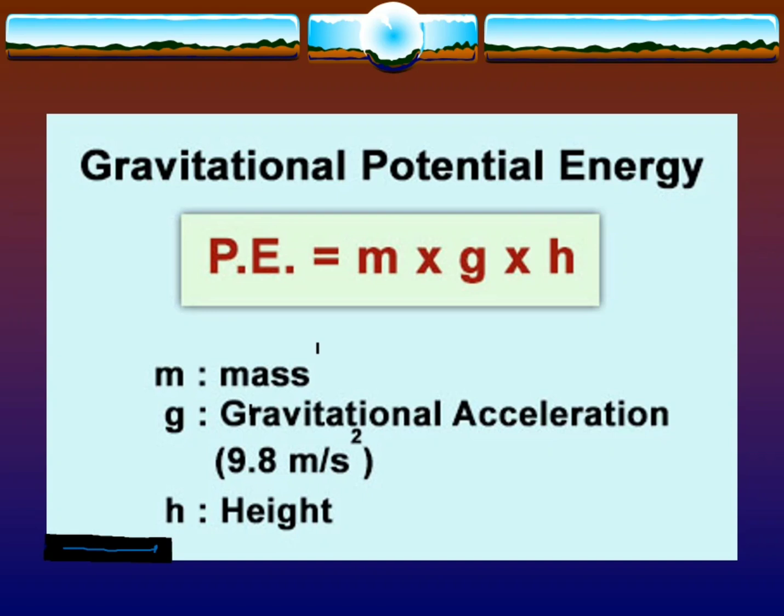Gravitational potential energy: PE equals m times g times h, where m is mass, g is gravitational acceleration equal to 9.8 meters per second squared, and h is height.